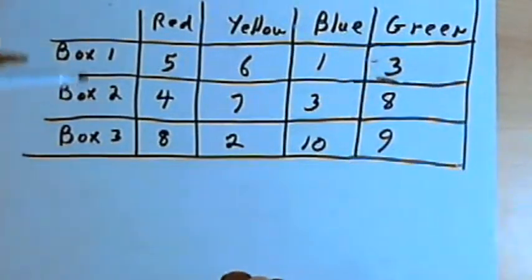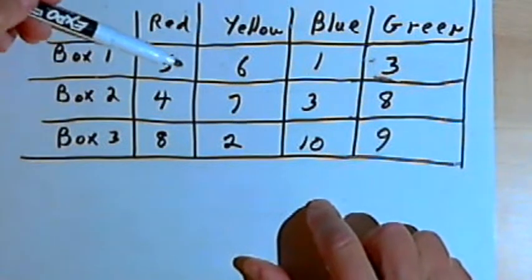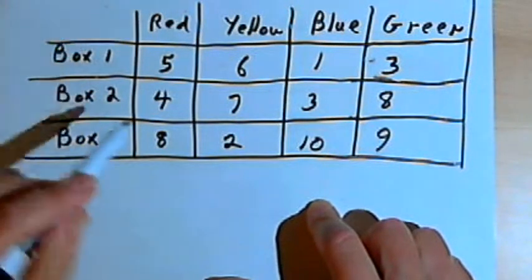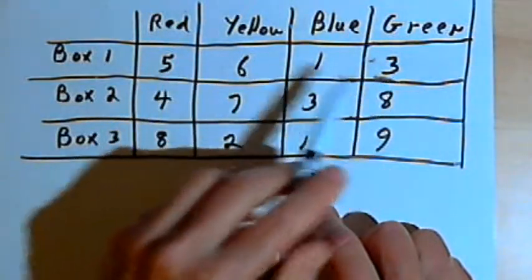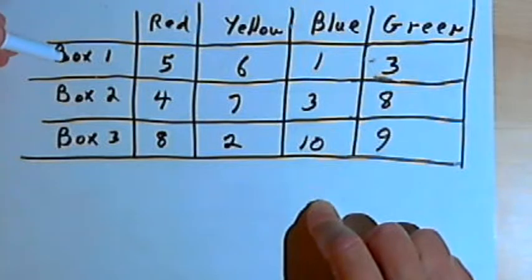For instance, if I take this table that I have here with all the information in it, the table represents the colors of marbles—red, yellow, blue, and green—that we find in three different boxes: box 1, box 2, and box 3.